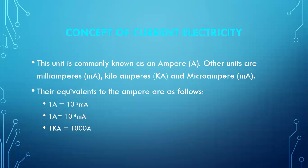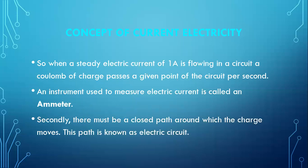For these equivalents, you can simply convert the unit to the standard unit that is ampere. When a steady electric current of one ampere is flowing in a circuit, a coulomb of charge passes a given point of the circuit per second.